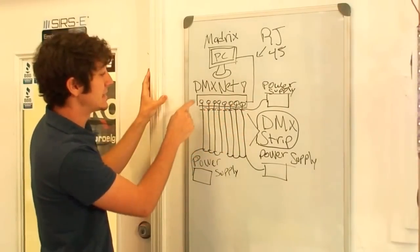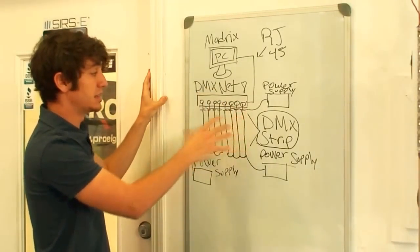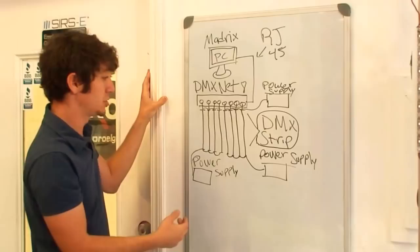And from a DMX net 8, each port you go with a DMX cable into each strip. So you lay down your strips depending on the configuration you want to reach and the pitch you want to reach with your strip.